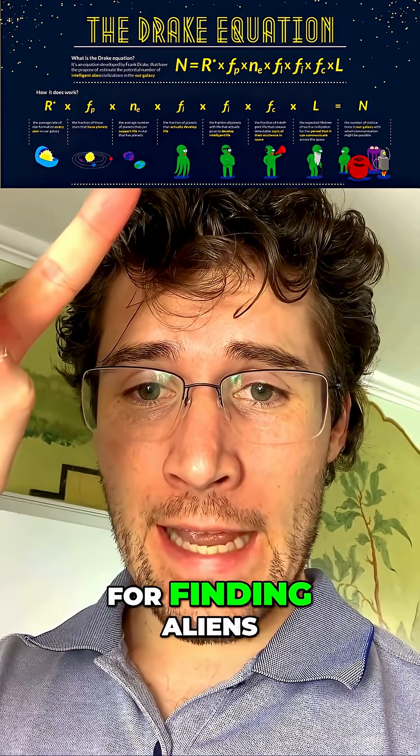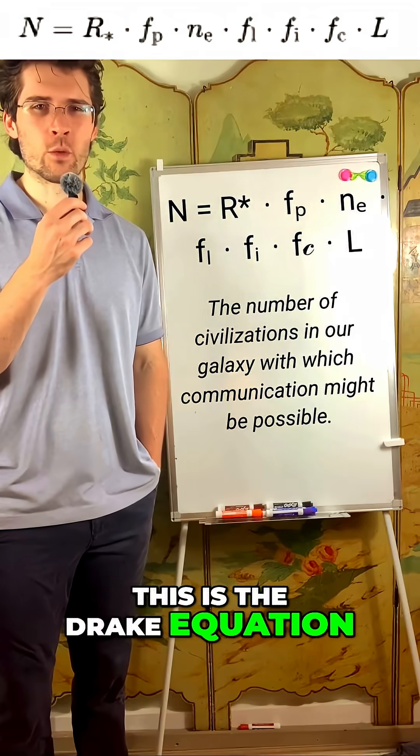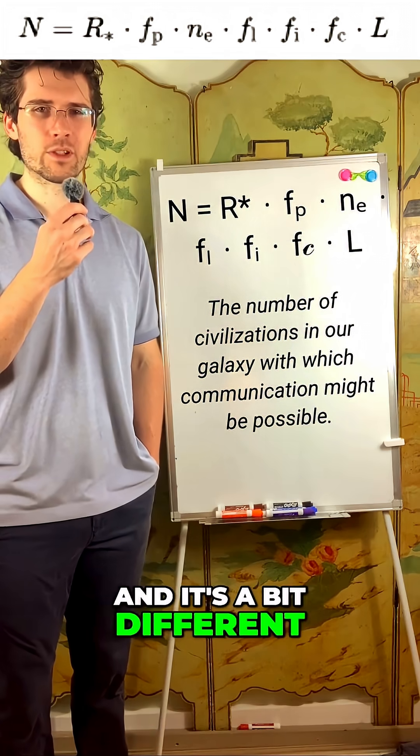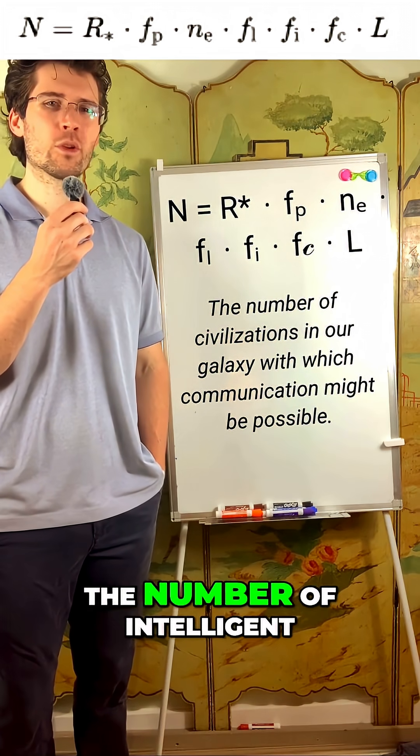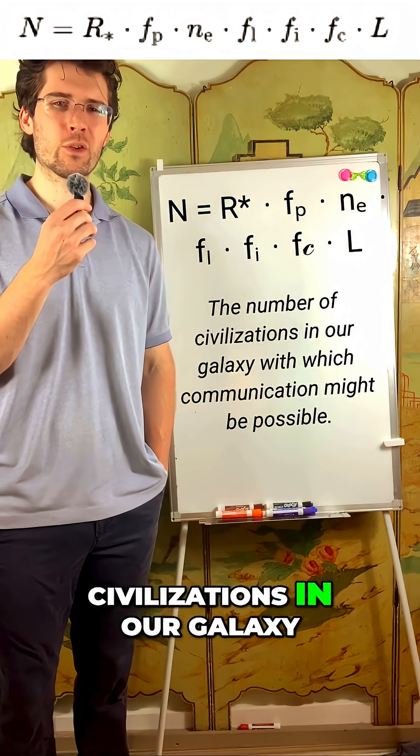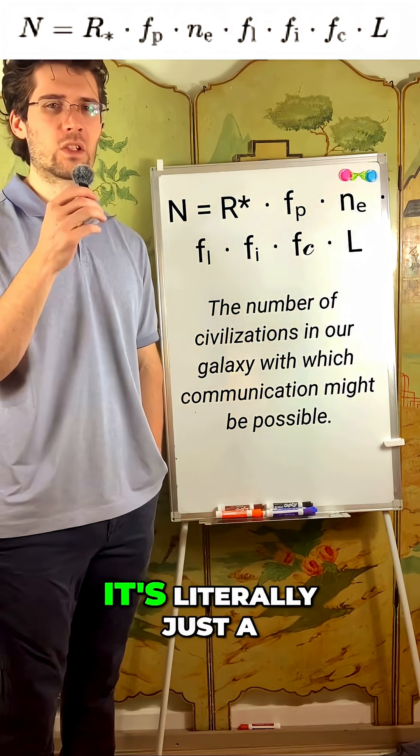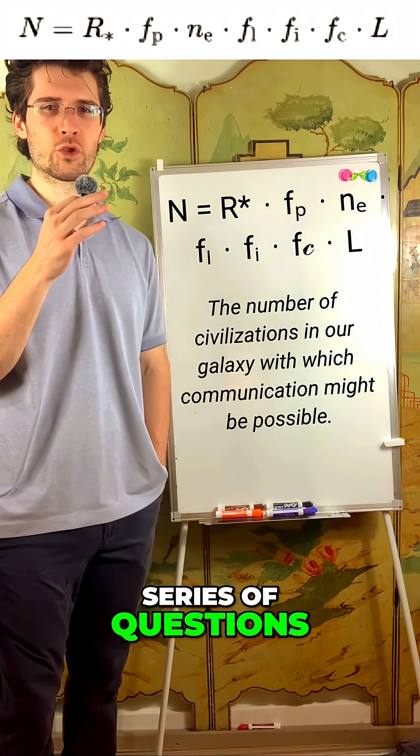This is the formula for finding aliens. This is the Drake equation, and it's a bit different. It's designed to estimate the number of intelligent civilizations in our galaxy that we could talk to. It's literally just a series of questions.